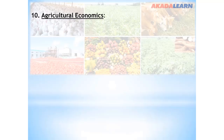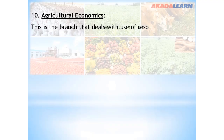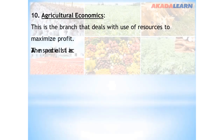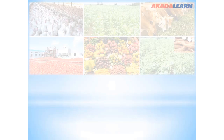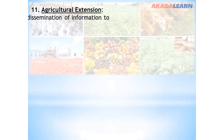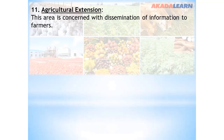Then we have agricultural economics. This is a branch of agriculture that deals with the use of resources to maximize profit. The specialist is called an agricultural economist. Then we have agricultural extension. Agricultural extension deals with dissemination of information to farmers.